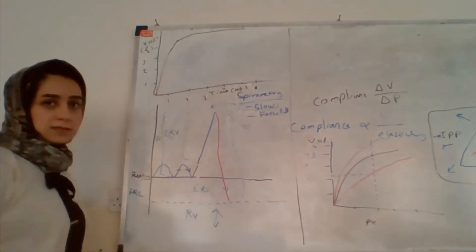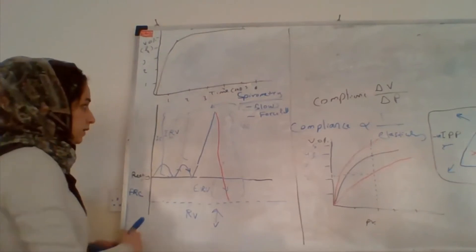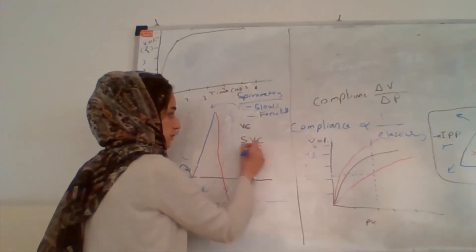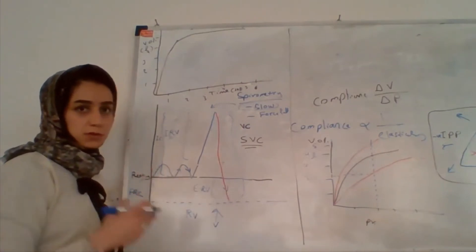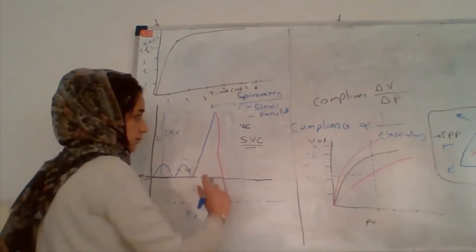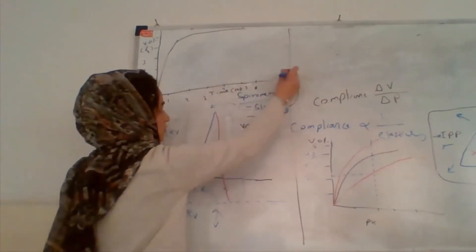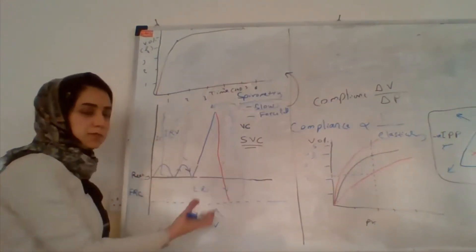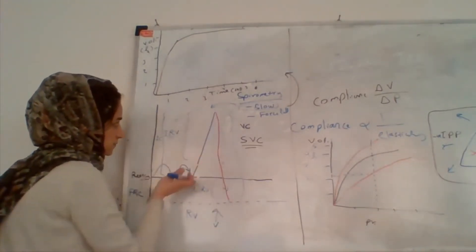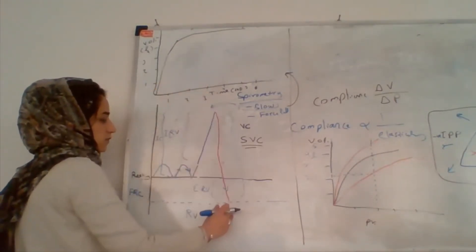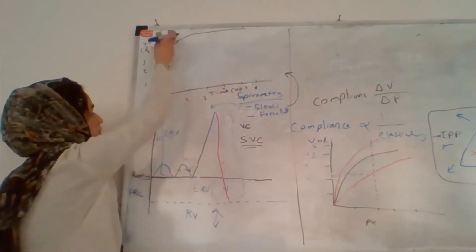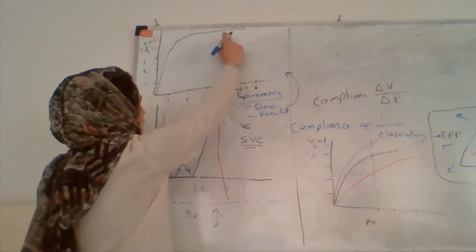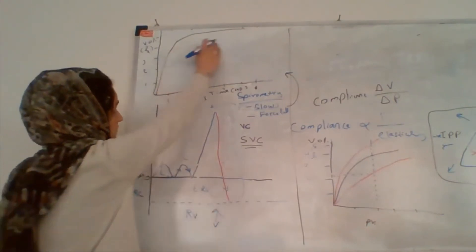Now, which one is the vital capacity here? The vital capacity measured in the slow maneuver is called the slow vital capacity. In the forceful maneuver, the equivalent is called forced vital capacity, or FVC. It is the same concept as vital capacity but performed forcefully. At maximum expiration, the maximum volume expired forcefully is the FVC, and the curve shows a rapid rise in volume initially, then levels off.